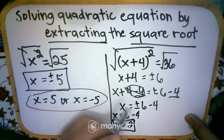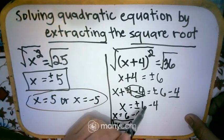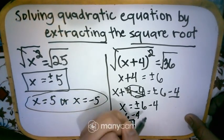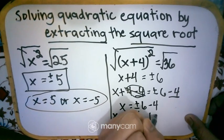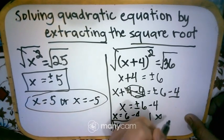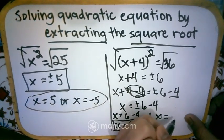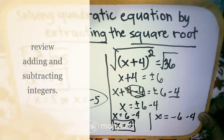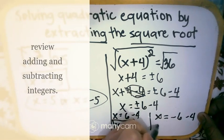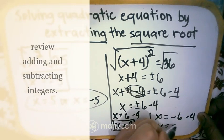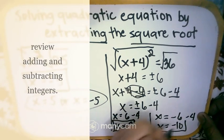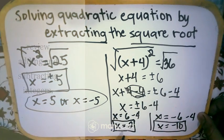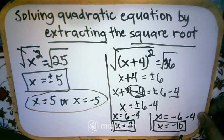And we are not yet done because the 6 can also be negative according to our solving. So x is equal to negative 6 minus 4. So negative 6 minus 4 is negative 10. So our final answer will be x is equal to 2 and x is equal to negative 10.